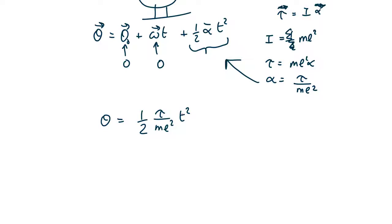So if you want to find what time is needed to go through one complete rotation, for one complete rotation theta will be equal to 2 pi. So rearranging we get that T squared equals 2 pi times 2 ML squared over the torque equals 4 pi ML squared over the torque.